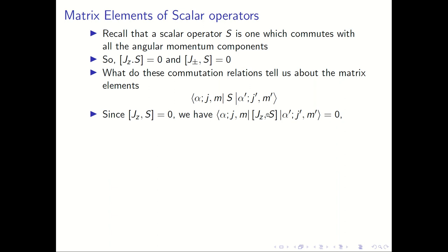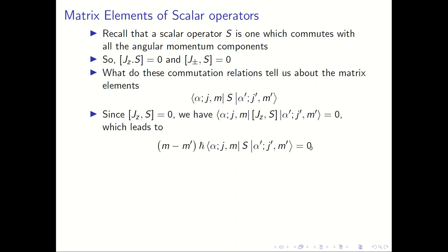Since j_z commutes with S, if you take the matrix element of the commutator [j_z, S] between the same two states you must get zero. Now [j_z, S] = j_z S − S j_z, so j_z acts on the bra in the first term and on the ket in the second term. j_z being the operator for which these are eigenstates, this immediately leads to (m − m')ℏ times the matrix element being zero, telling us that the matrix element must vanish unless m equals m'.